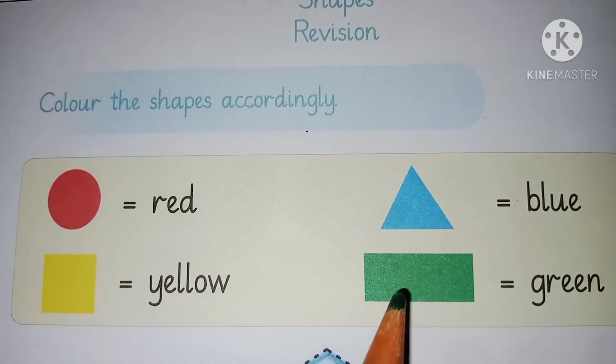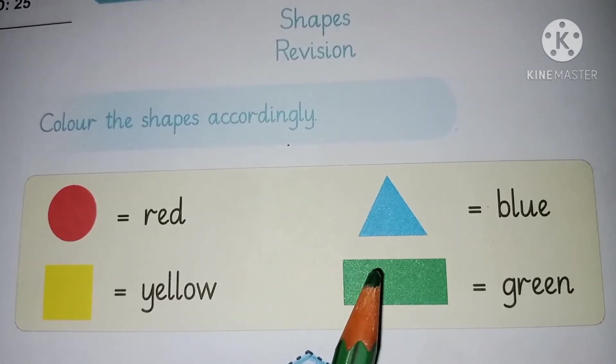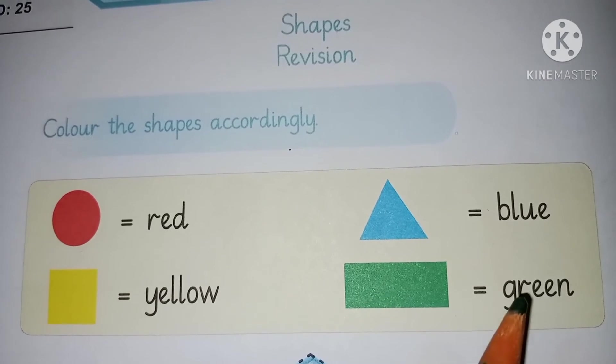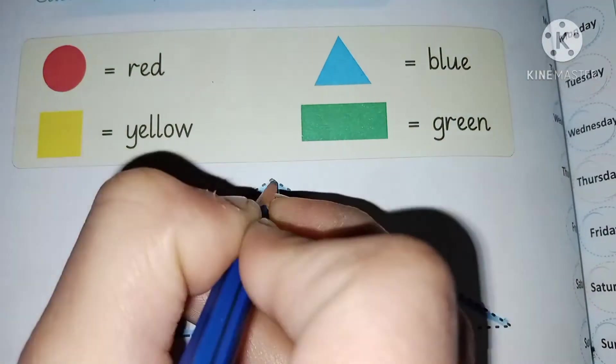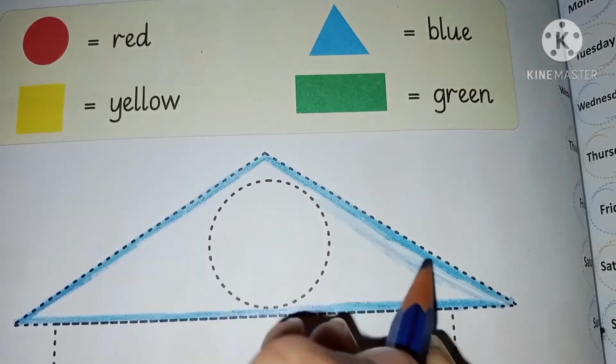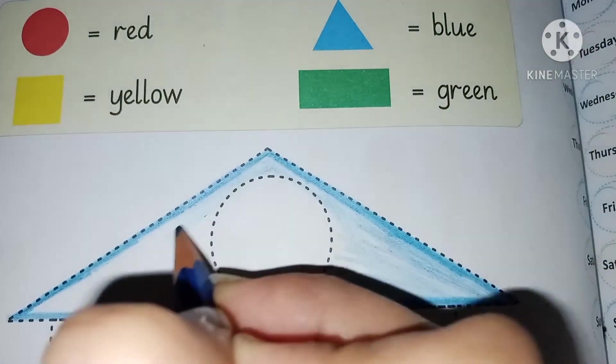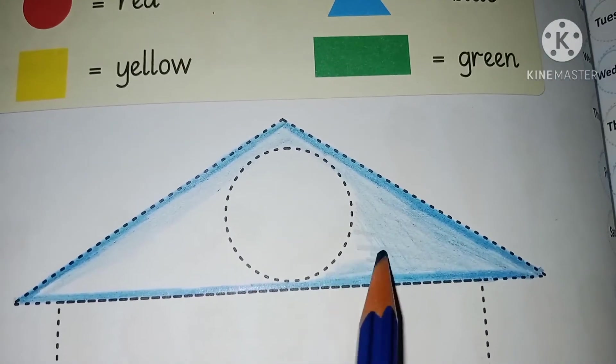Which shape is this? Rectangle. And rectangle color is green. My dear students, take blue color and do in triangle. First of all, make dark outline and do light color.